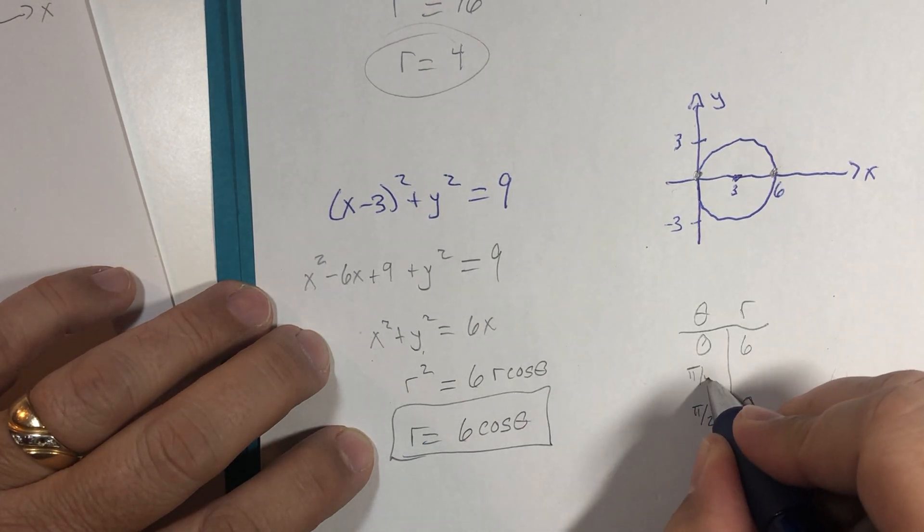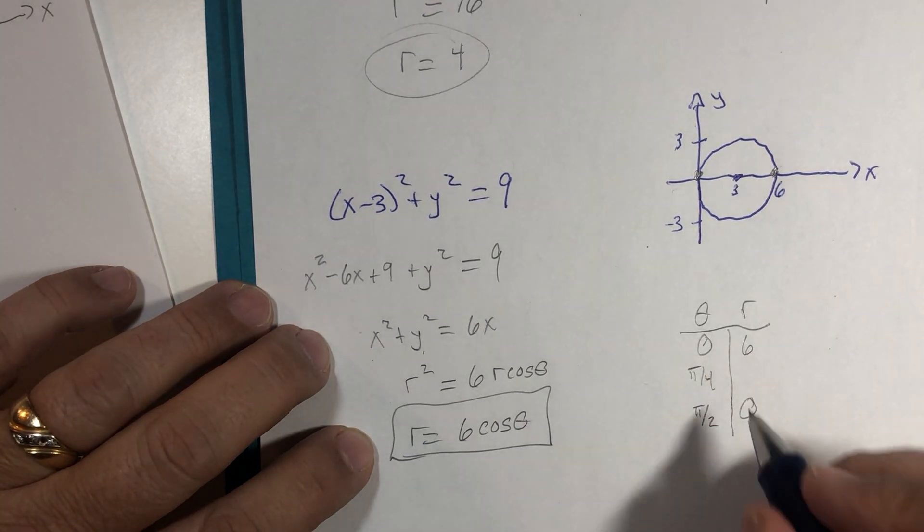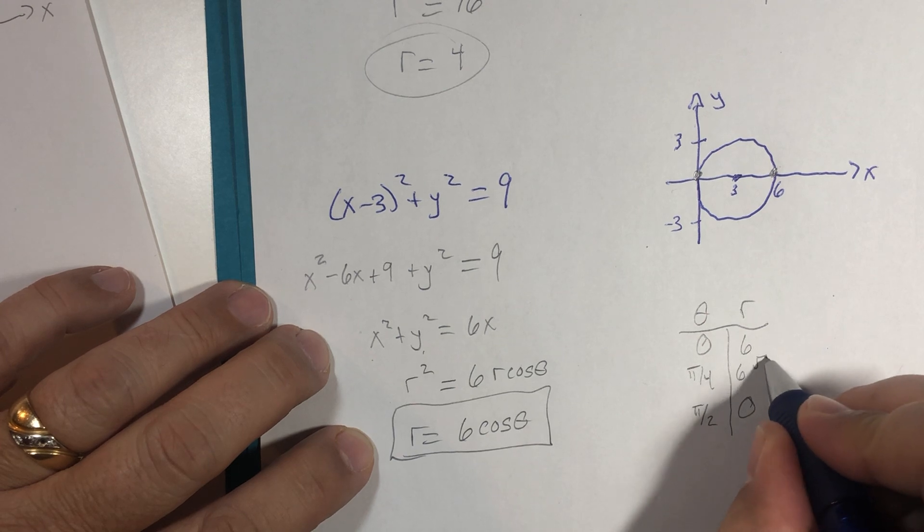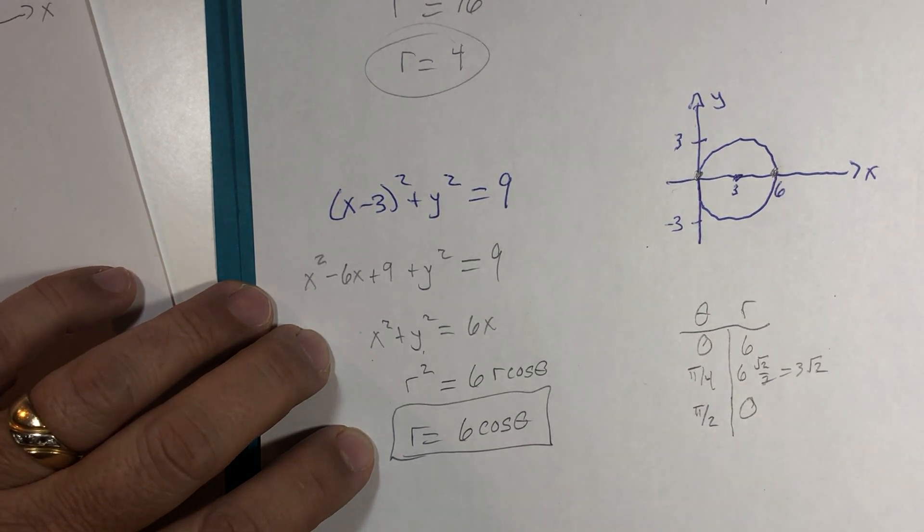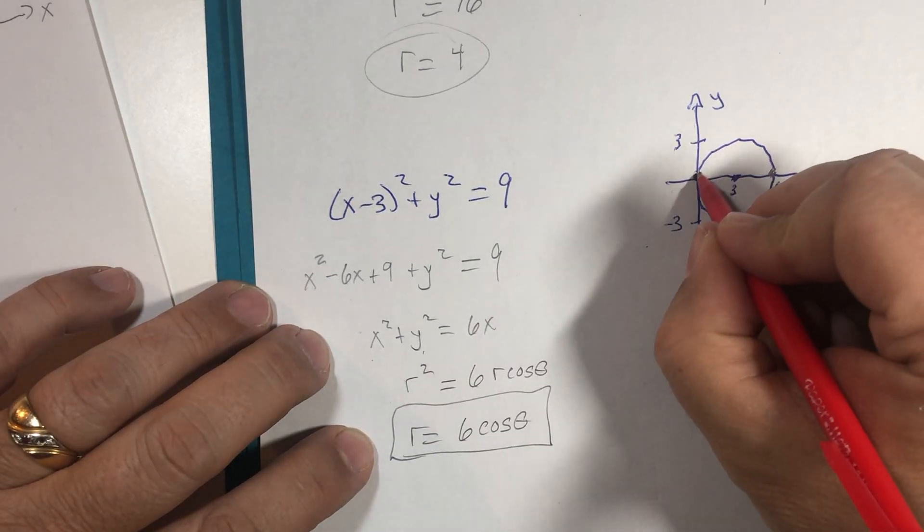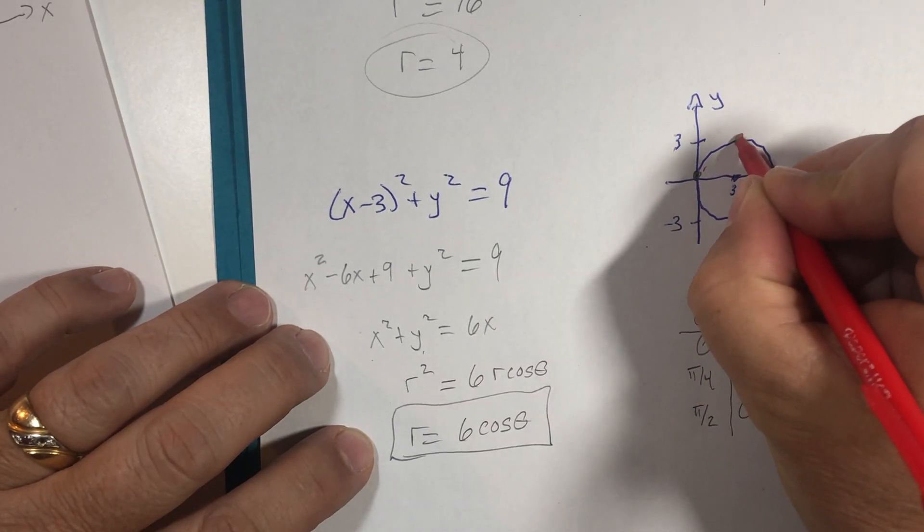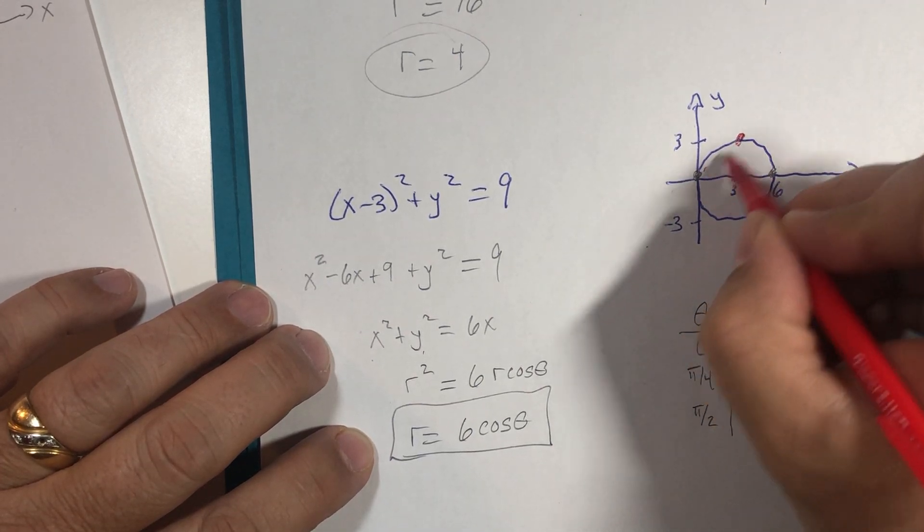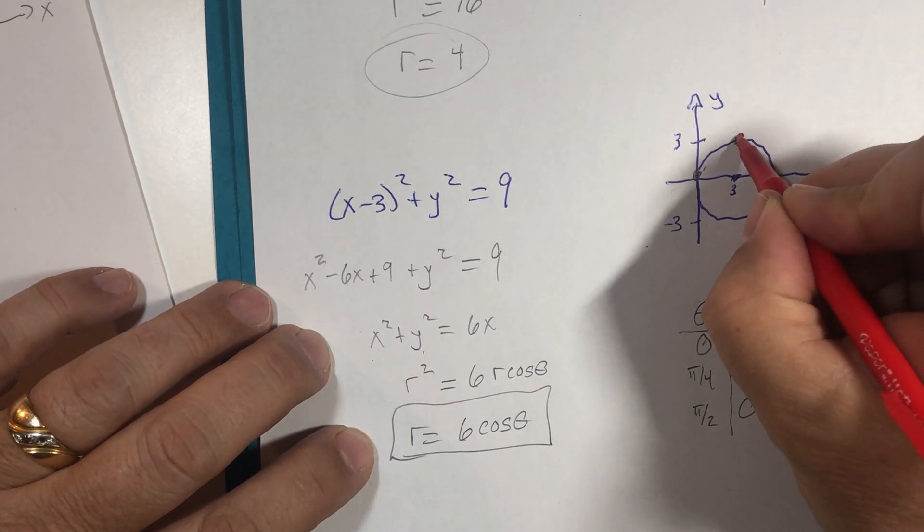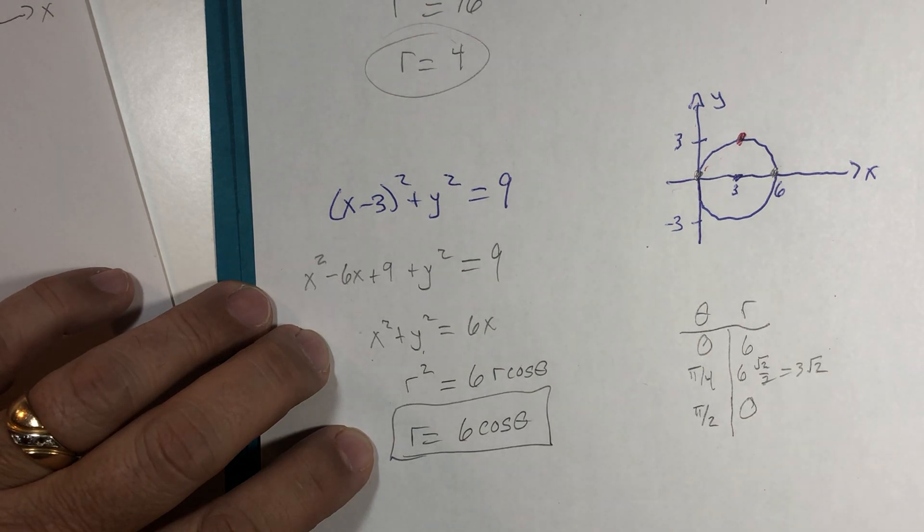If I were to evaluate at pi over 4, I would get 6 root 2 over 2, which is 3 root 2. And I think we would find that at 45 degrees, that takes us, there's your 3 root 2 distance right there. That would take us to the point at the top of the circle.